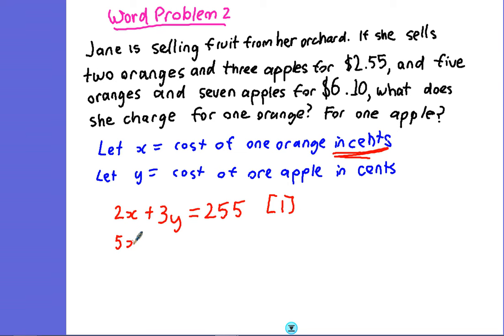So let's call that equation one. Similarly, we're told that she sells five oranges and seven apples for six dollars ten. That means that 5x + 7y = 610 cents, and that's our second equation.